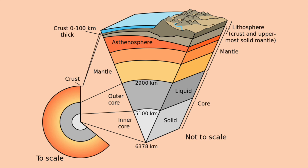The oceanic crust is denser, thinner, and mainly composed of basalt, while the continental crust is less dense, thicker, and mainly composed of granite. The mantle plays an important role in the evolution of the crust and provides the thermal and mechanical driving forces for plate tectonics.